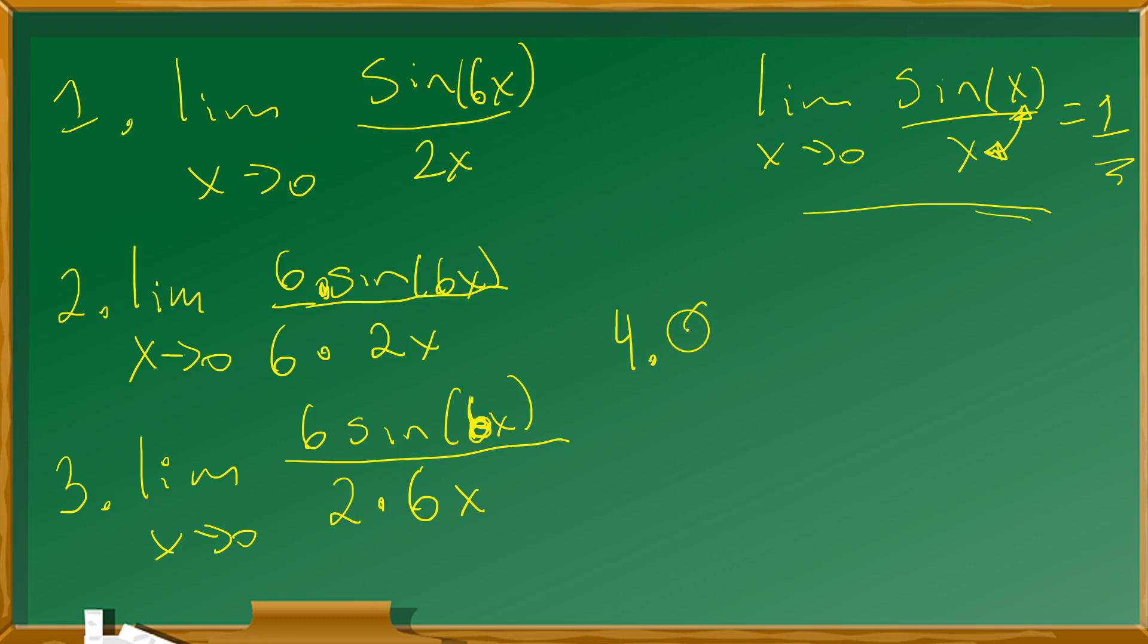I'm going to pull that out, so it's going to give me 3 on the outside for that reason. And then here at the limit as x approaches 0 of sine 6x over 6x. Now this has exactly the form: sine of 6x over 6x in the limit is equal to 1.